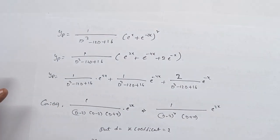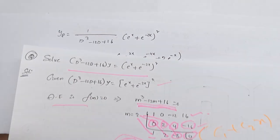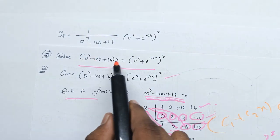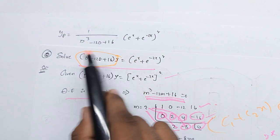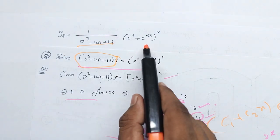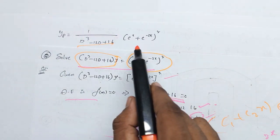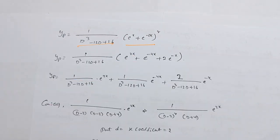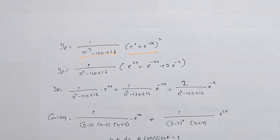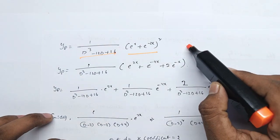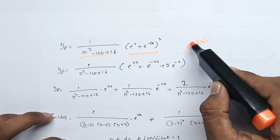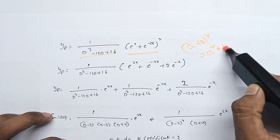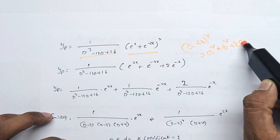We will use yp. yp is equal to 1 by Q into the right side. The formula for (A plus B)² is A² plus B² plus 2AB.